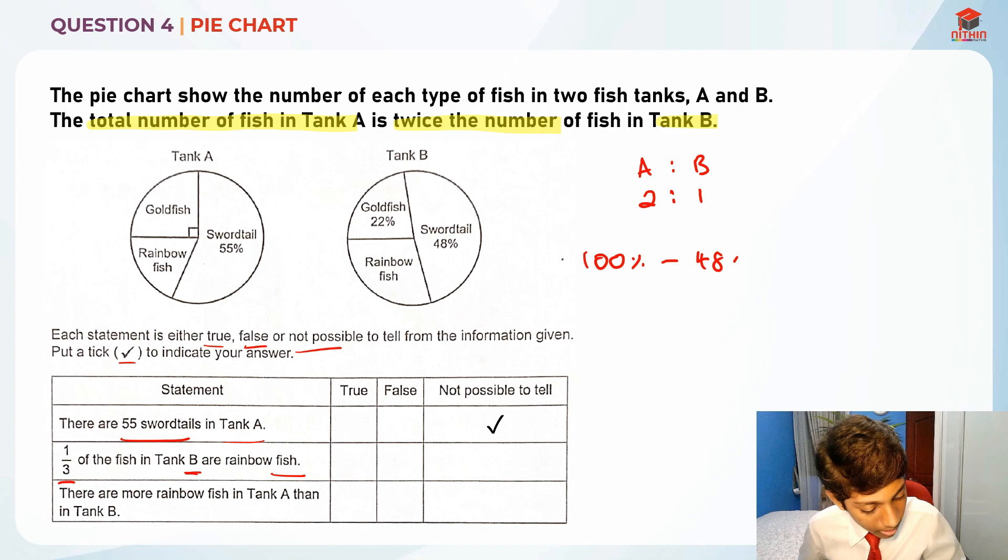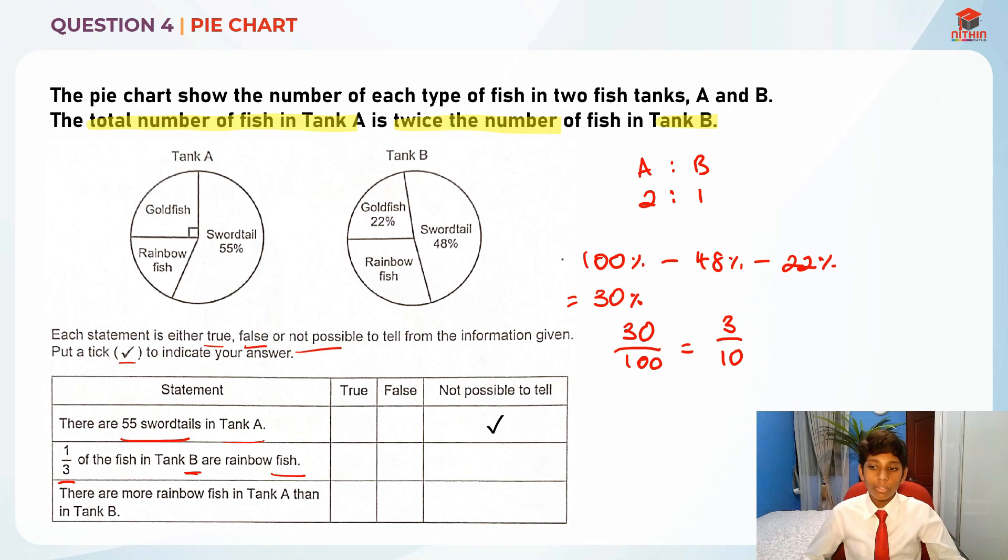Minus 48 percent minus 22 percent, so what does it give us? 100 minus 48 minus 22 is actually 30 percent. So 30 out of 100, is this one third? It's actually 3 over 10, this is not one third. And thus we know that this statement is false. Then the last statement: there are more rainbow fish in tank A than tank B.